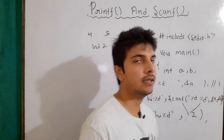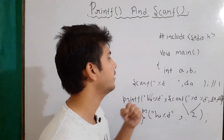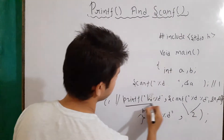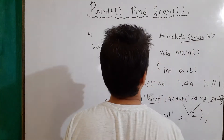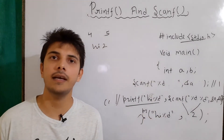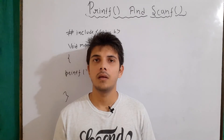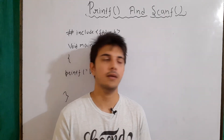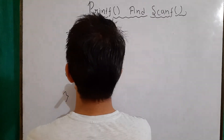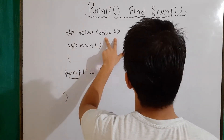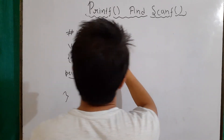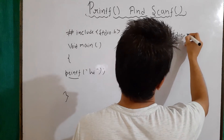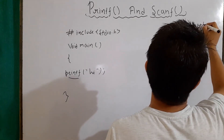We talked about the prototype and the calling of our printf function and what it returns — but where is the definition of our function? The definition of these functions is already present in the library files. Library files are pre-compiled files used in C programming. For example, if there is the printf function and its prototype is written in stdio.h, then a standard library file will be associated with this function.